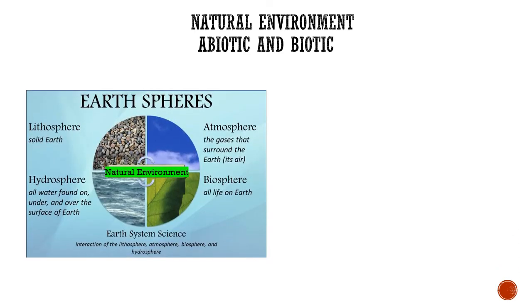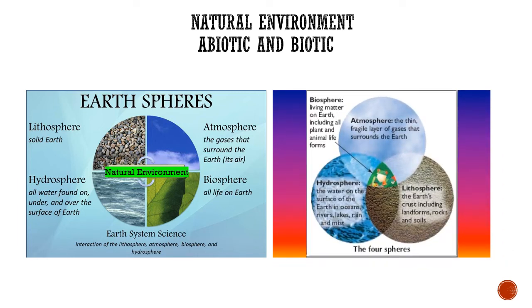Now, with the help of a diagram, we will see the natural environment — the abiotic and biotic components of natural environment. Lithosphere is the sphere of land, the solid portion of the earth. Atmosphere is the sphere of gases surrounding the earth's surface, consisting of various gases important for the survival of life. Hydrosphere is the sphere of water. And biosphere means the sphere of life, which is found where all three spheres — atmosphere, hydrosphere, and lithosphere — interact with each other.